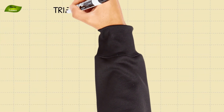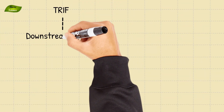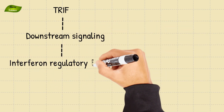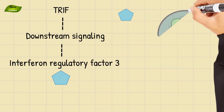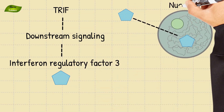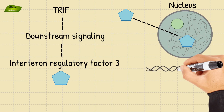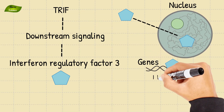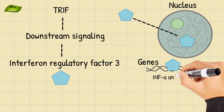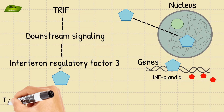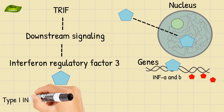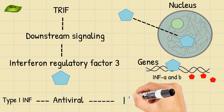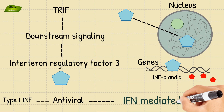TRIF activates downstream signaling events, ultimately leading to the activation of interferon regulatory factor 3, also known as IRF-3. Activated IRF-3 translocates to the nucleus and induces the transcription of genes encoding type 1 interferons, which are IFN-alpha and IFN-beta. Type 1 interferons play a crucial role in the antiviral response by inducing the expression of interferon-stimulated genes, also known as ISGs.